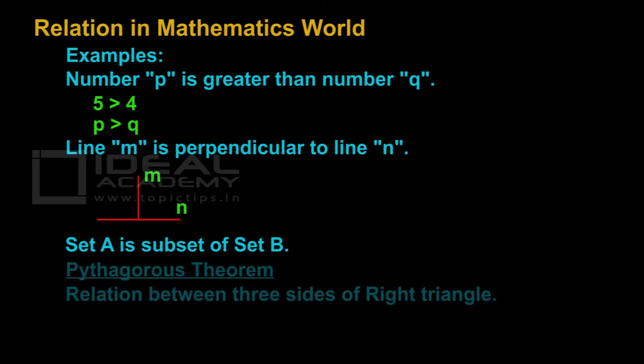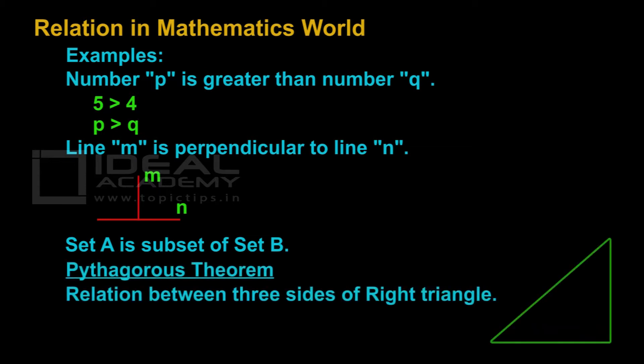One more example: in a right triangle, we have P, B and H. According to Pythagoras' theorem, P² + B² = H². This is also a relationship between or among P, B and H. There are three identities, and there is a pattern that P² + B² = H² — Pythagoras' theorem.